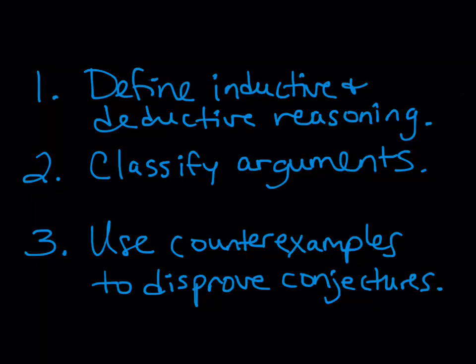We're continuing a discussion on types of mathematical reasoning. There are three goals for this video. Number one, define inductive and deductive reasoning. Number two, classify arguments as one of those two types, either inductive or deductive. And then number three, we want to talk about using counterexamples to disprove conjectures — and recall that those conjectures are the predictions that we make when we are using inductive reasoning.